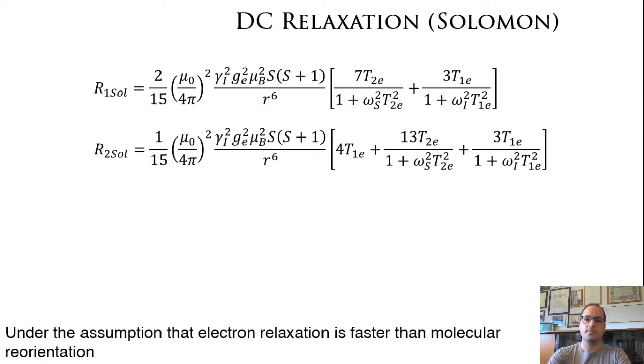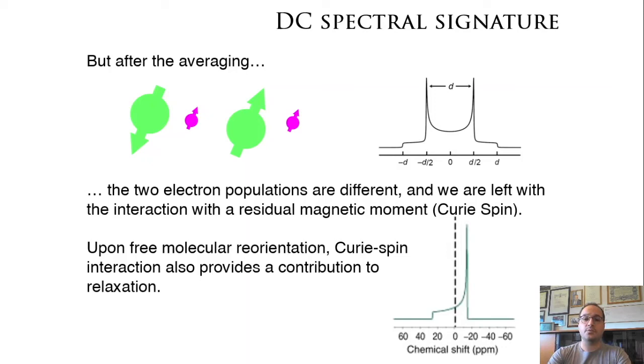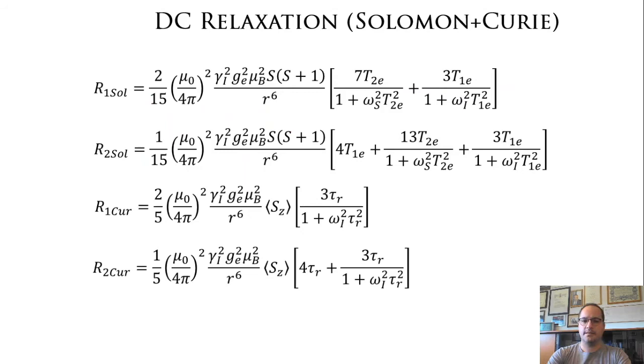After the averaging, since the two electron populations are different, we are left with the interaction of the nuclear spin with the residual magnetic moment, the so-called Curie spin. The Curie spin provides, upon free molecular reorientation modulated by tau r, a further contribution to relaxation which is exactly the same form as the CSA relaxation. And this is the complete Solomon plus Curie nuclear relaxation induced by the presence of an electron.